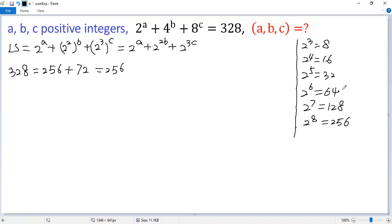The largest number we can take now is 64, so plus 64 and then plus 8. So we get 2 to the power of 8 plus 2 to the power of 6 plus 2 cubed.